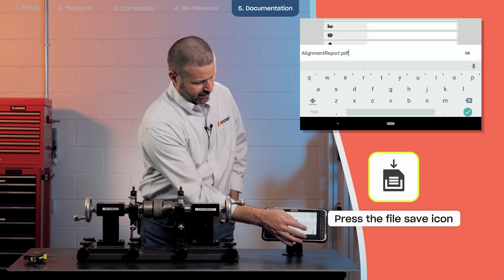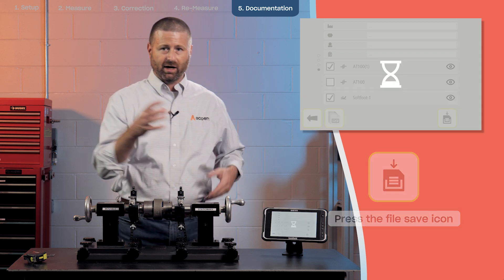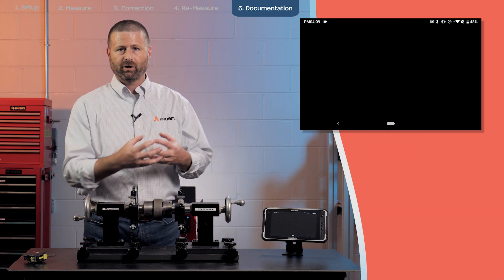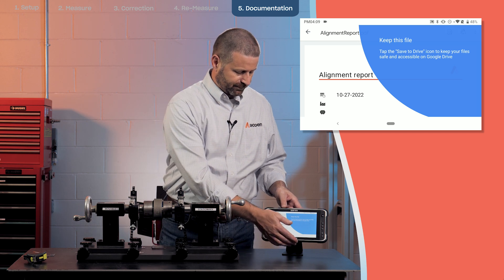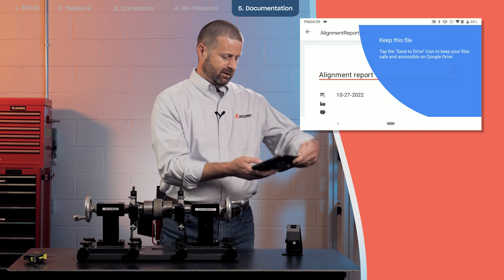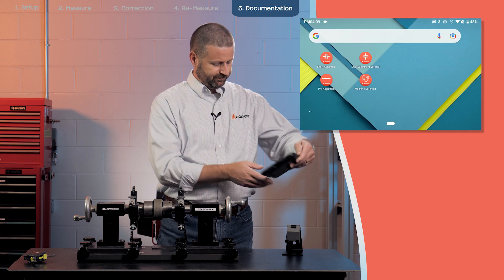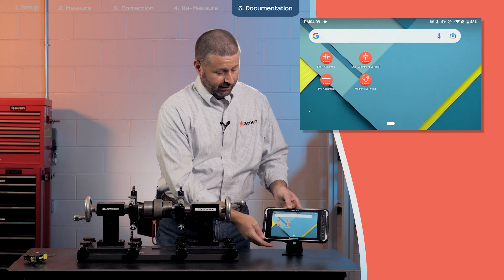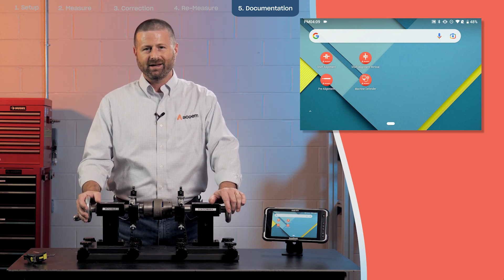And then this creates the PDF report, which is a combination of those two reports put into one. And now we have that file saved for future reference on this device. So that completes the shaft alignment process with the ACOEM AT100.